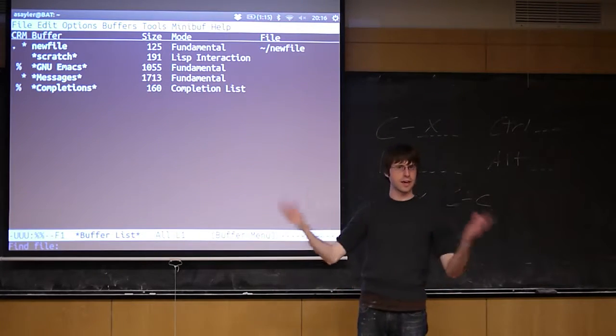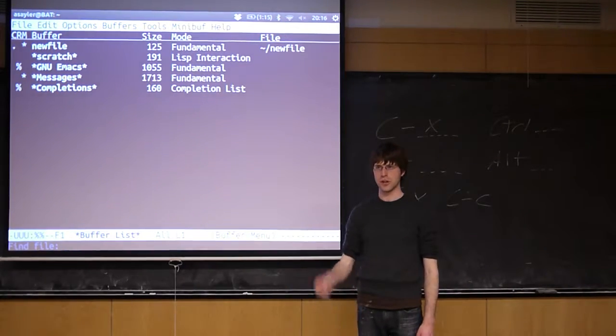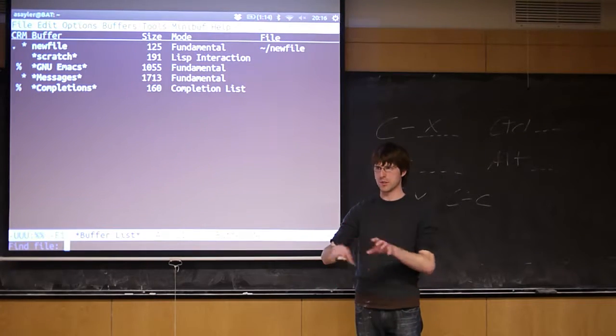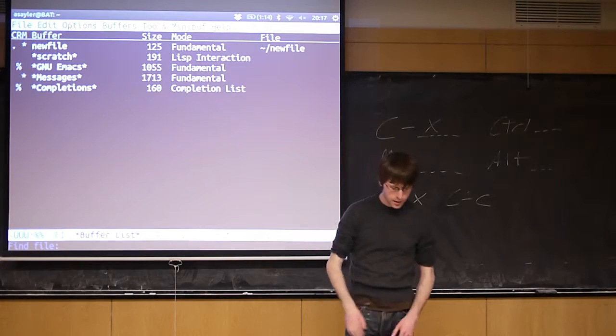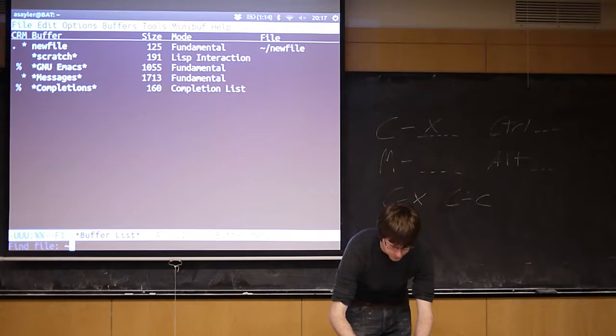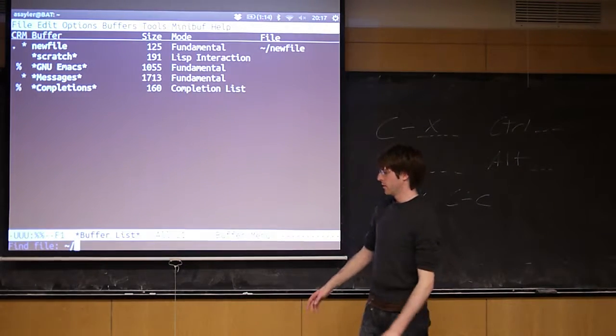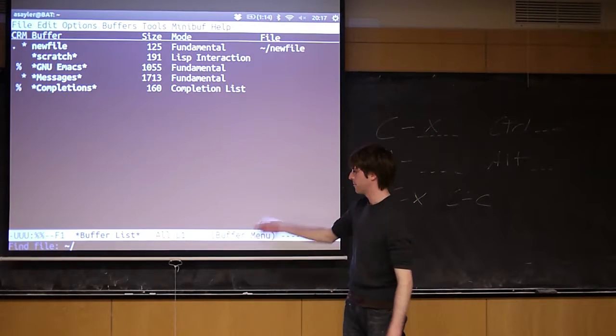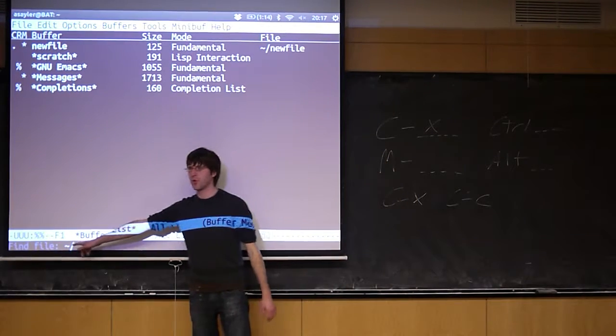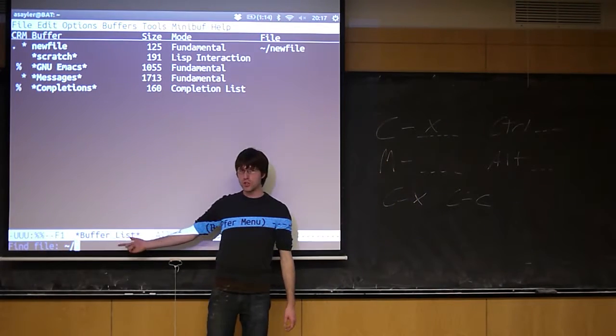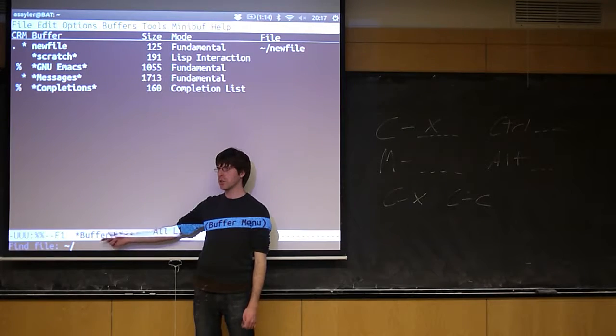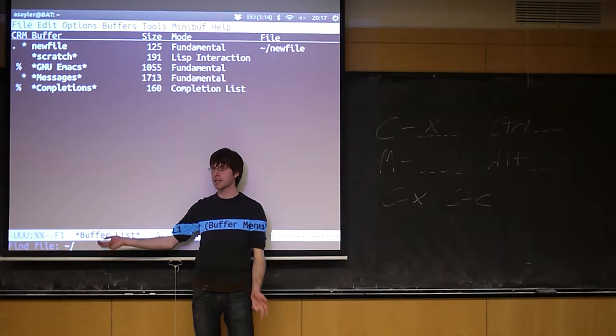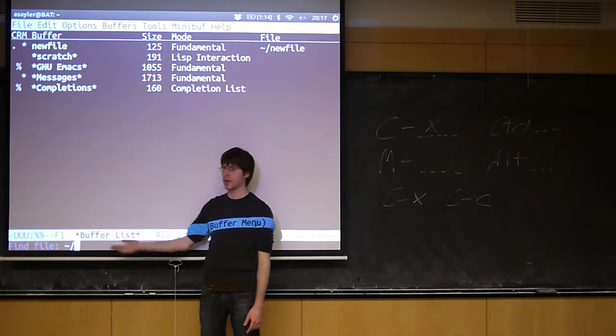Sometimes you don't have that entire thing memorized, right? It's easier to browse through the file tree than it is to just immediately know what you need to type in. So if you do control-x control-f, by default it's going to give you a prompt for your current folder. If you just hit enter right now, so essentially if you open the folder in Emacs, if you open a directory in Emacs instead of opening a file, you're going to get a screen that looks like this.